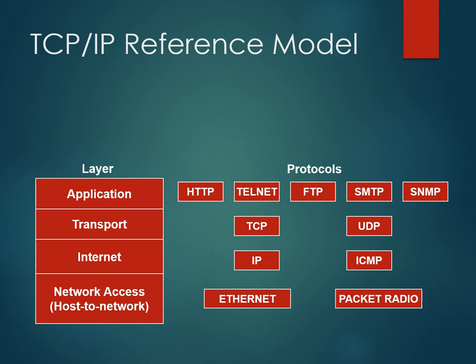Telnet is the Terminal Network protocol. Now we can also find the differences between the OSI model and TCP/IP model. The main difference is that the TCP/IP model has four layers while the OSI reference model has seven layers. Another major difference is that TCP/IP is a practical model while OSI is a theoretical model.